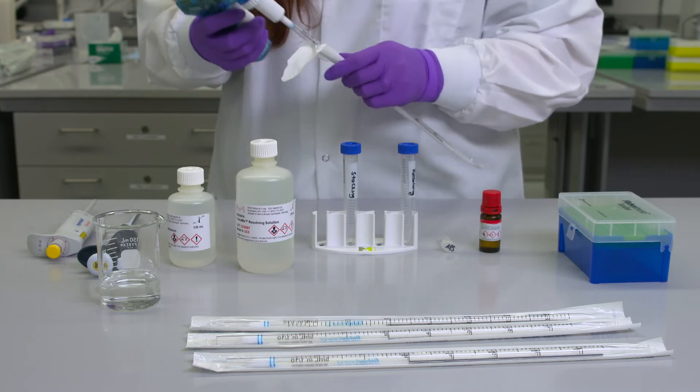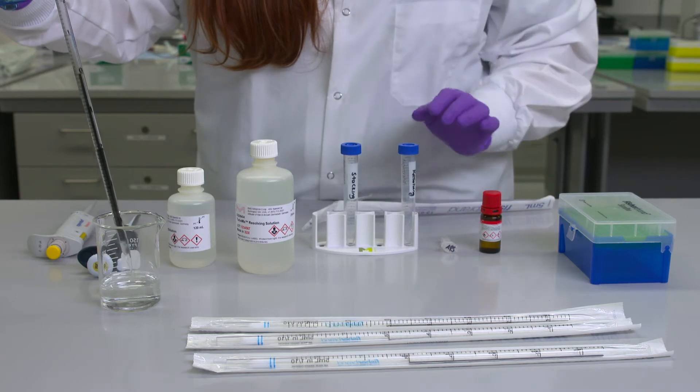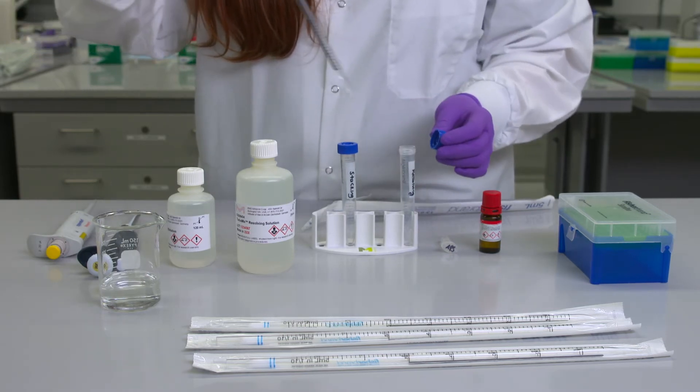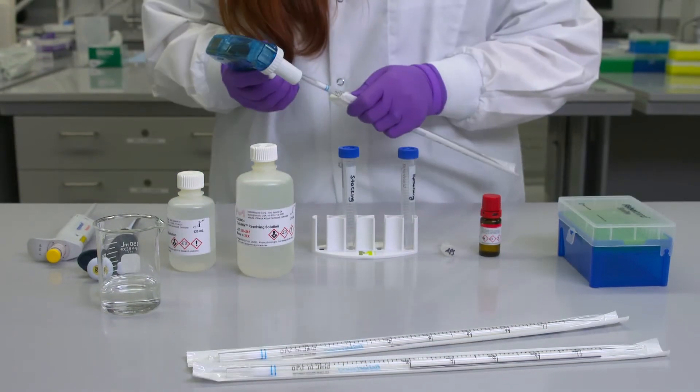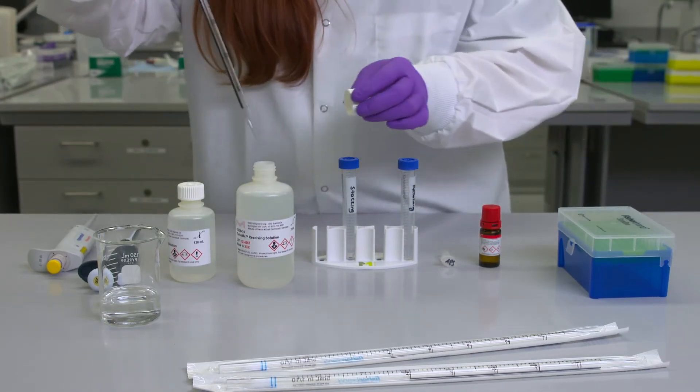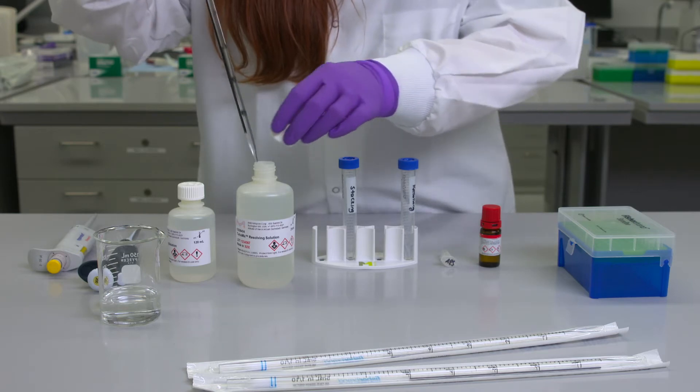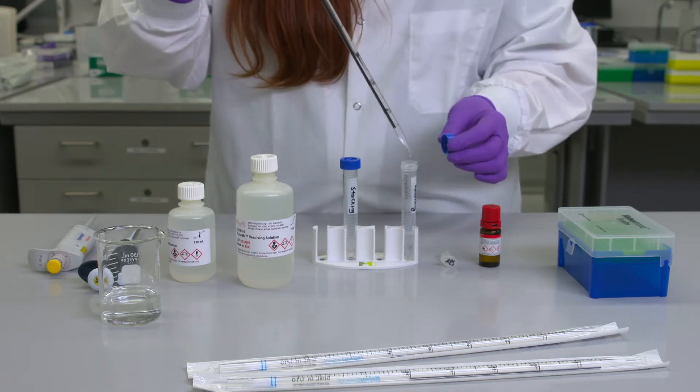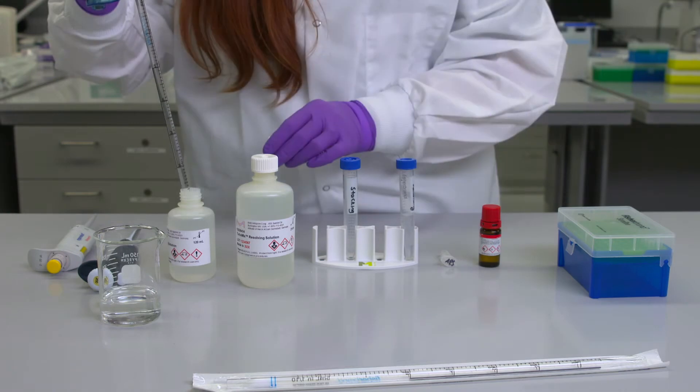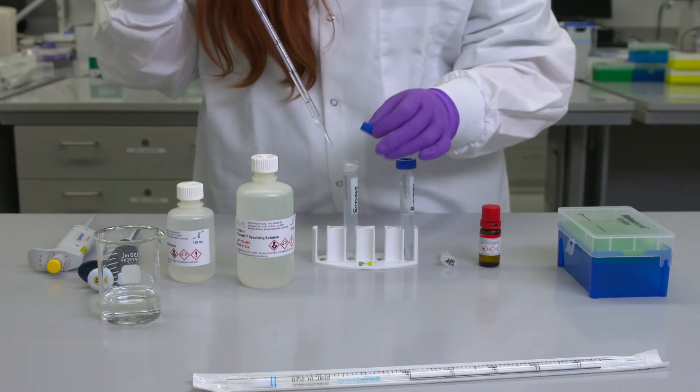The resolving solution is provided at 20% acrylamide and can be diluted with deionized water to your desired gel percentage between 8 and 15%. So, to make a 10% gel, I'll add 3 milliliters of resolving solution to 3 milliliters of deionized water. The stacking solution is provided at 4% acrylamide and should not be diluted.